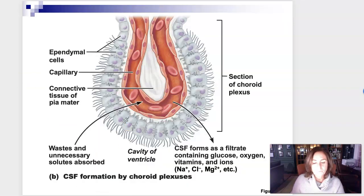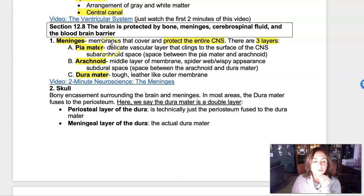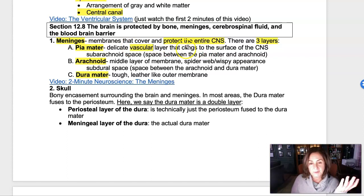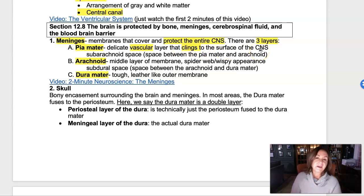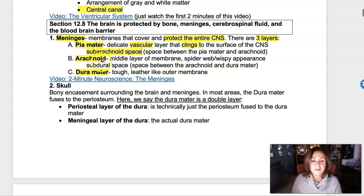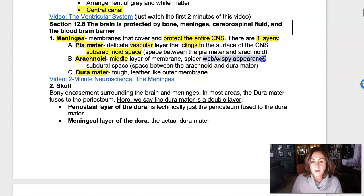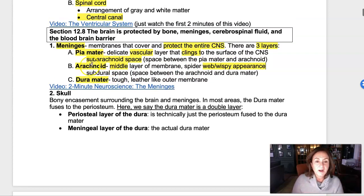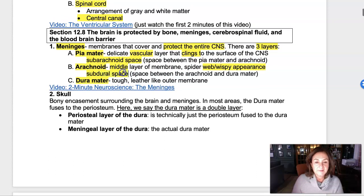There's a gap between those layers. The pia mater is the inner layer, vascular with a rich blood supply, clinging to the surface of the CNS — so there's no space underneath the pia mater. Outside of the pia mater there's a space called the subarachnoid space, named because it's underneath the arachnoid, the middle web-like layer. The space between the arachnoid and the outer layer is called the subdural space, and then the dura is the tough outer encasement.